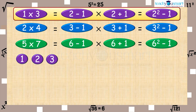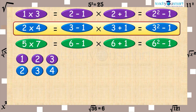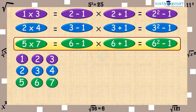When we consider 1 and 3, the number between them is 2. So 1 multiplied by 3 equals (2 minus 1) multiplied by (2 plus 1) equals 2 square minus 1. Likewise, 3 is the number between 2 and 4, so 2 multiplied by 4 equals 3 square minus 1. Similarly, 6 is the number between 5 and 7, so 5 multiplied by 7 equals (6 minus 1) multiplied by (6 plus 1) equals 6 square minus 1.